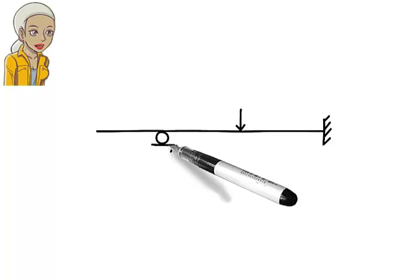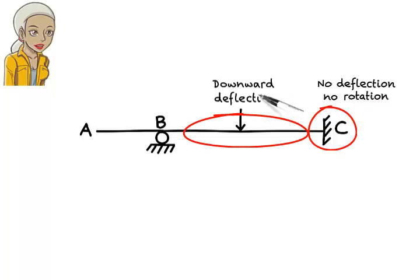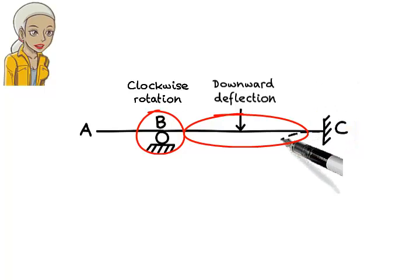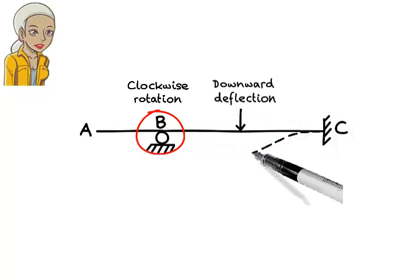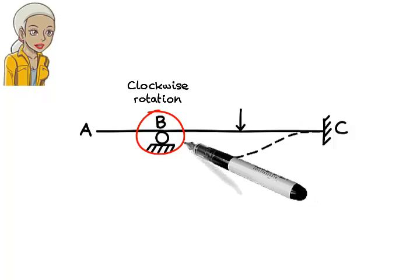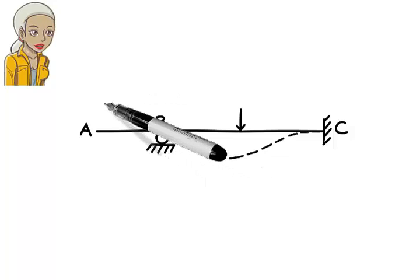What about this beam? How does it deflect? Here we have no deflection or rotation at C, downward deflection in segment BC, and a clockwise rotation but no deflection at B. Therefore, in the absence of any loads applied to segment AB, the beam is going to deflect like this. Zero deflection and rotation at C, downward deflection in BC — the deflection starts decreasing past the point of maximum, going back to zero at B, where the beam is forced to turn clockwise. Since there is no load pushing down on segment AB, the segment deflects upward following the direction established at B.